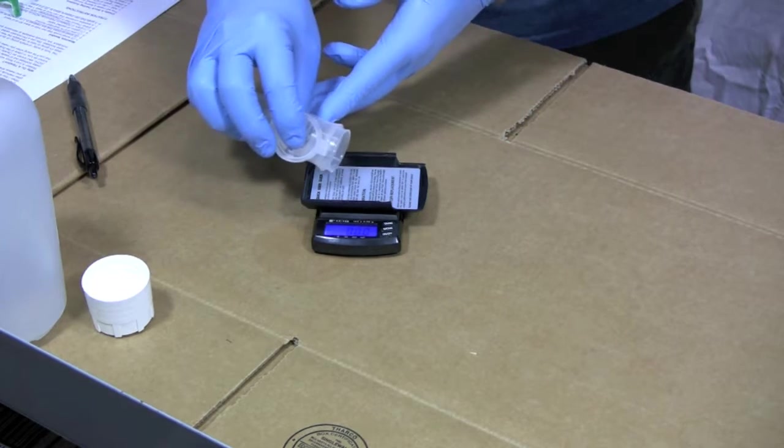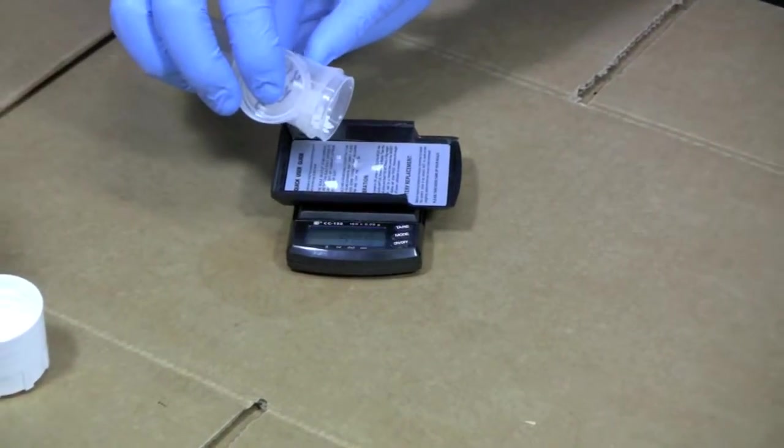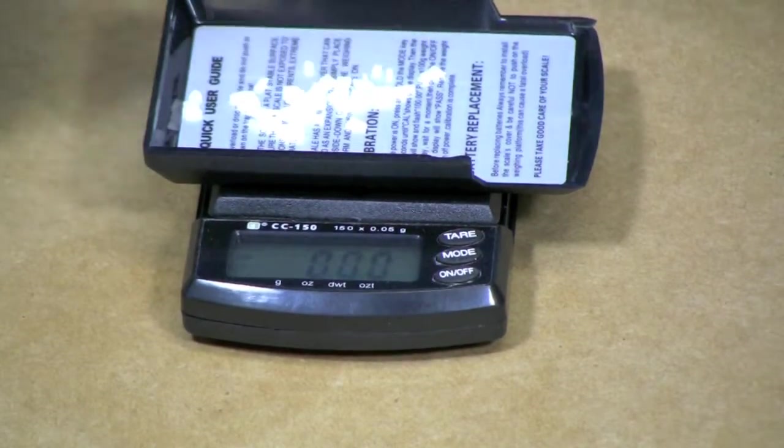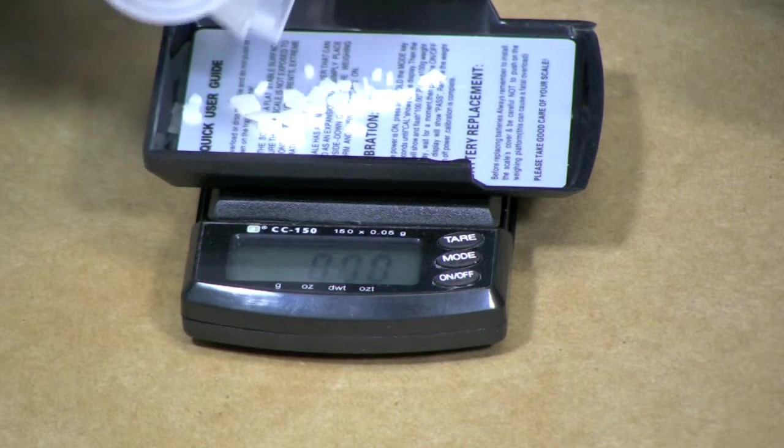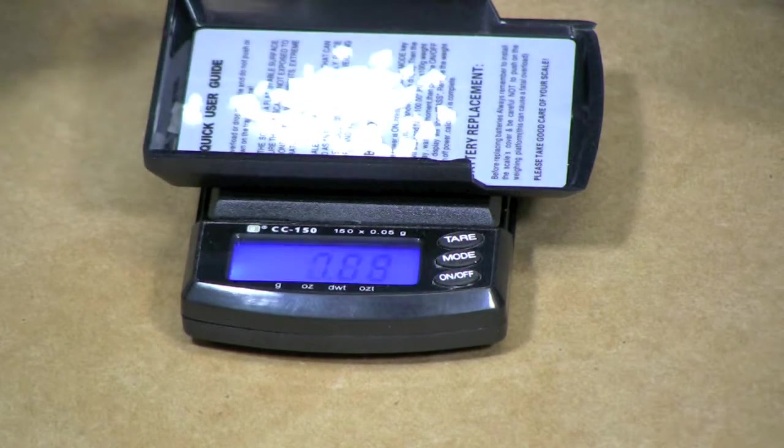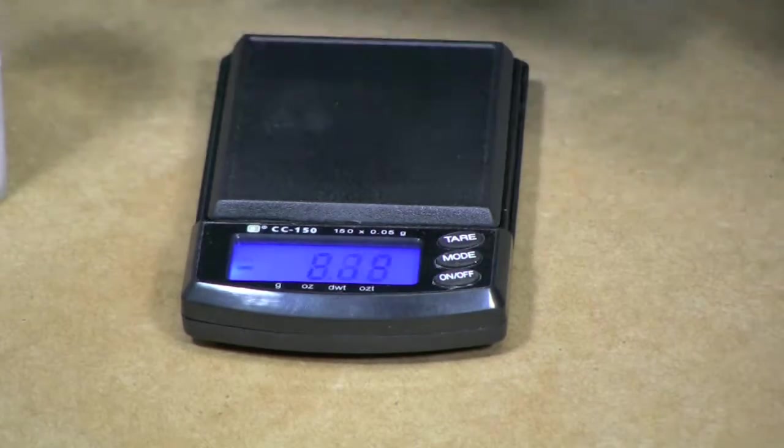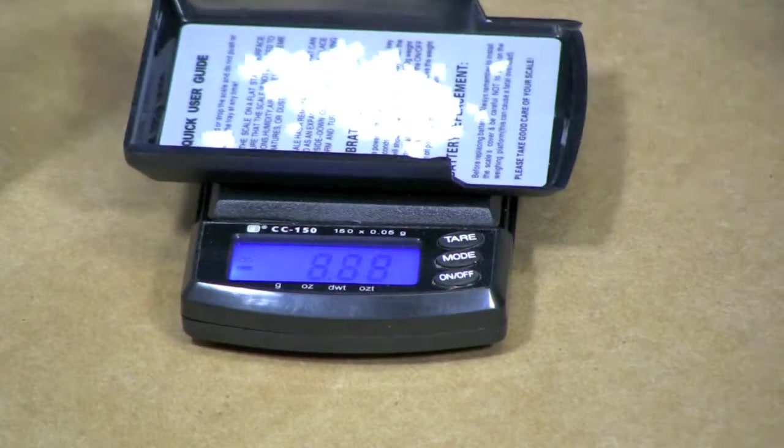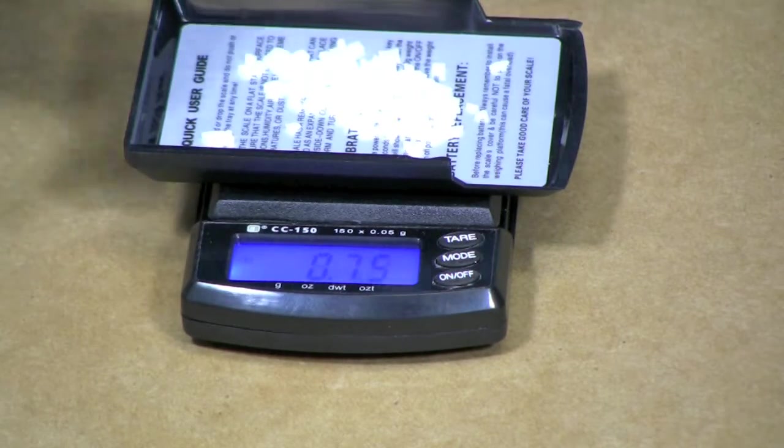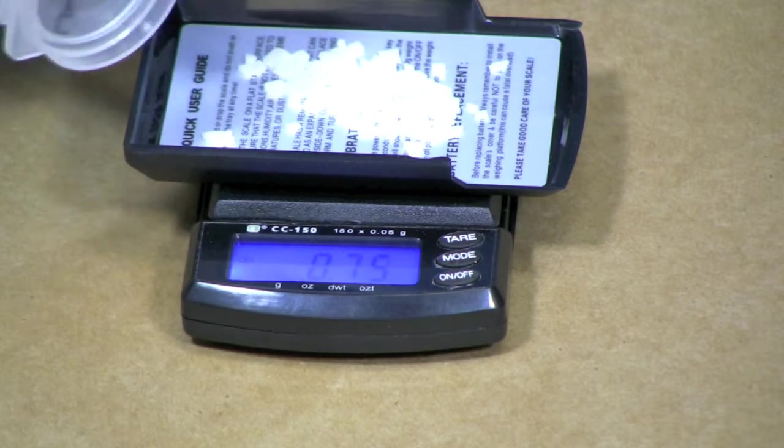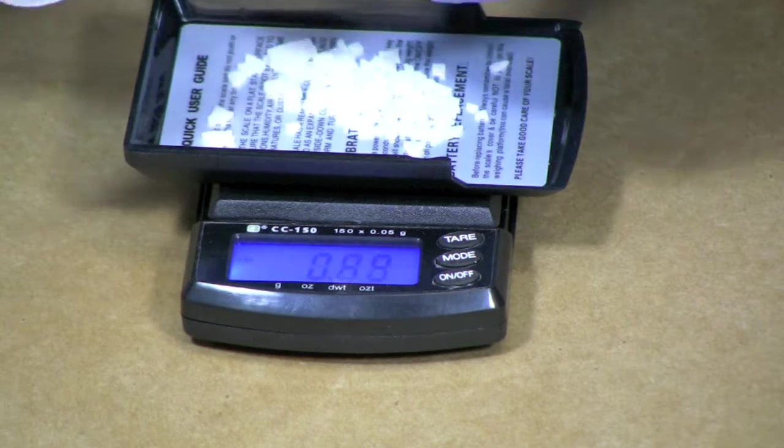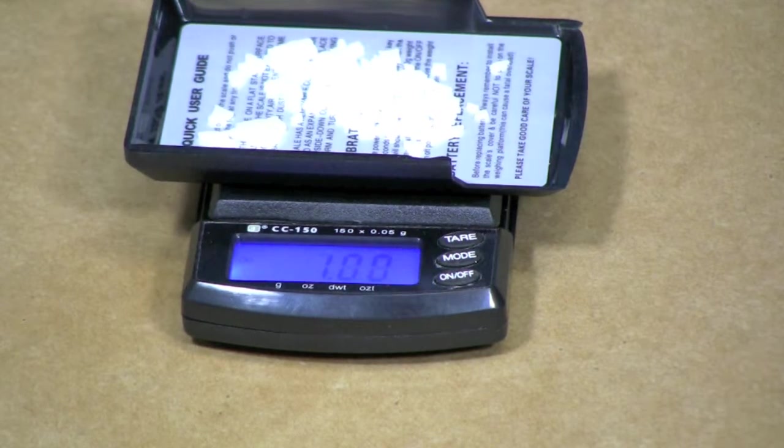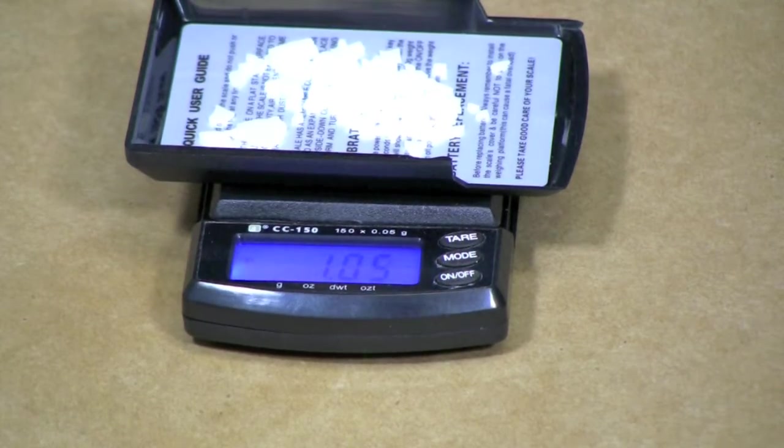With that done we're now going to weigh out our gram of catalyst. You want to try and get this as close as you can to a gram. And this scale is accurate down to 0.05 of a gram. It's a little bit too much so we're going to back that off. Okay we're almost there. Nine, five, one. Right on the money.